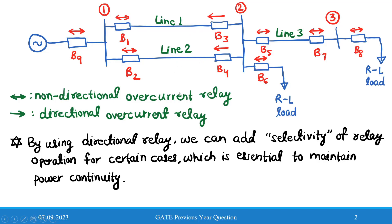On the other hand, if there is a fault in line two, then R4 will trip and R3 will not trip, maintaining power continuity in the rest of the lines so the rest of the system remains intact.